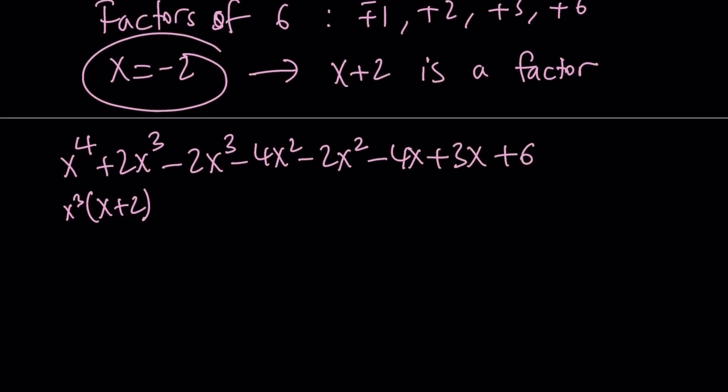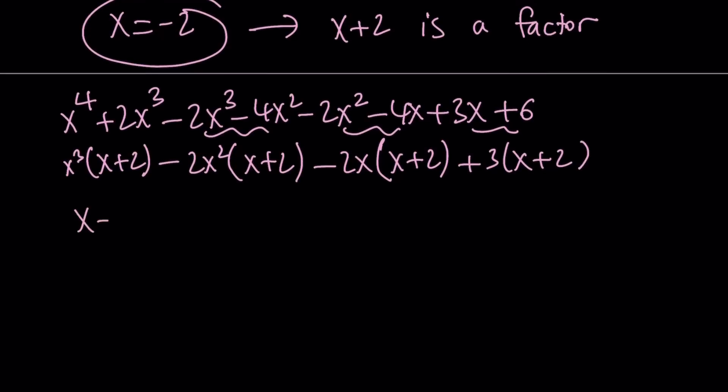And finally, when we add the 6, we're going to be good to go. Now we're going to be grouping these. So these two, these two, and these two. This is going to be negative 2x squared times x plus 2. This is negative 2x times x plus 2. And this is 3 times x plus 2. If you do this correctly, you're going to get a common factor. If you don't, you won't. So x plus 2, we can take out and get x cubed minus 2x squared minus 2x plus 3. Okay.